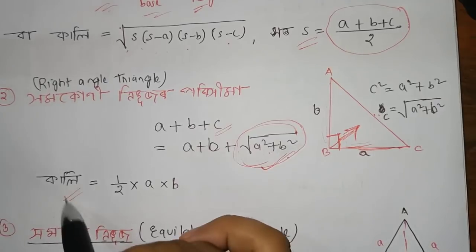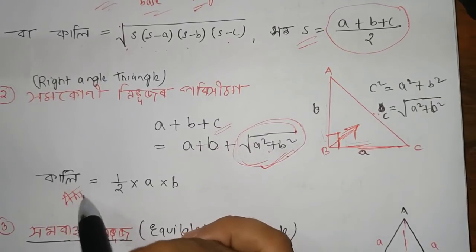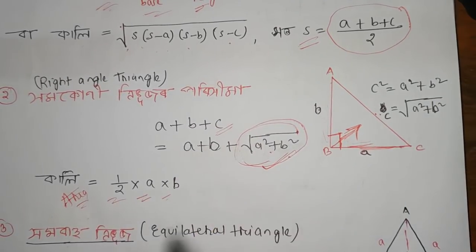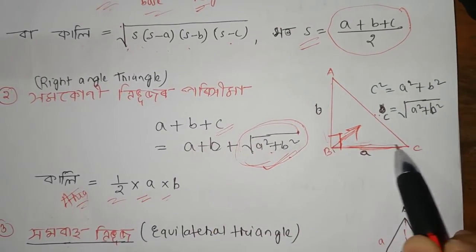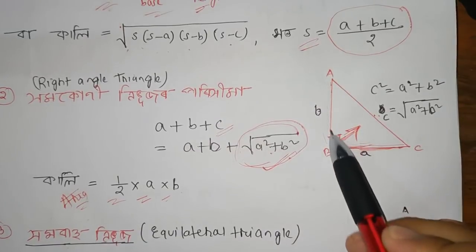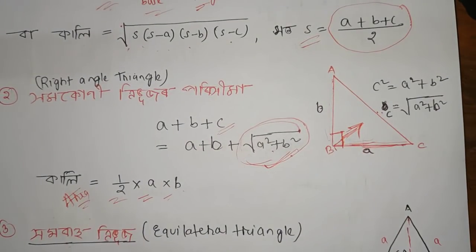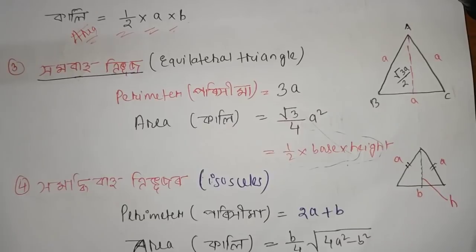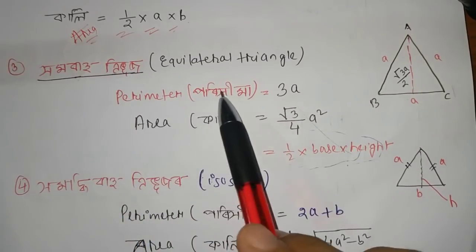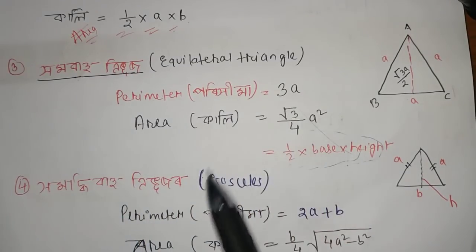Half into base into height — A and height is B. Next, homo-bahu trifus, meaning equilateral triangle.